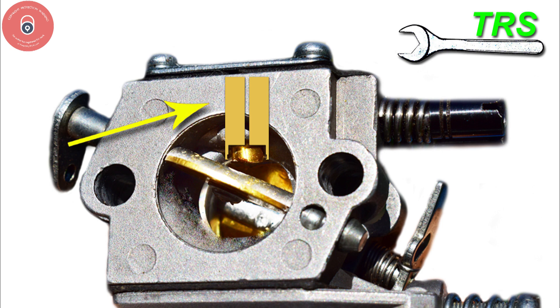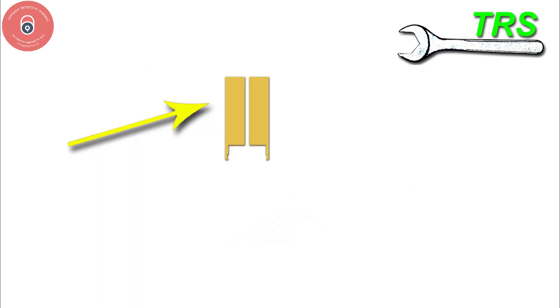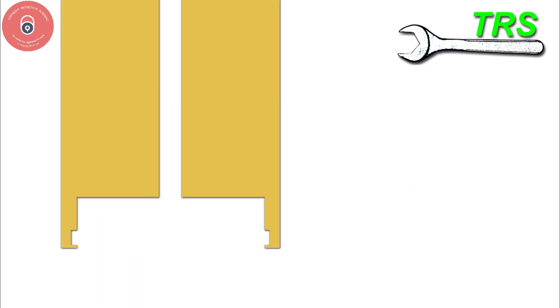The main jet protrudes out into the inlet of the carburetor here next to the Venturi and it reaches upwards through the carb body and into the metering area. It's the main jet alone that we're now going to focus in on.